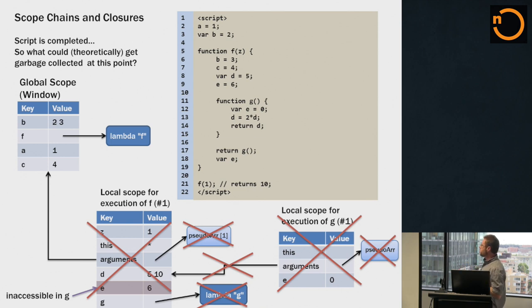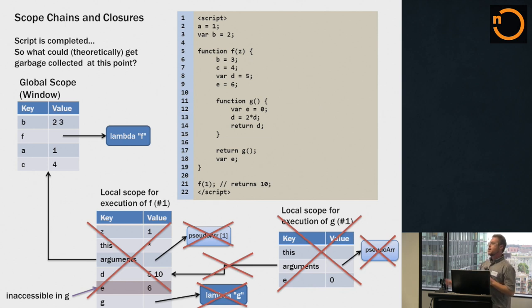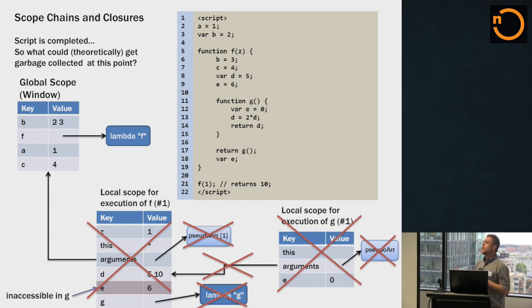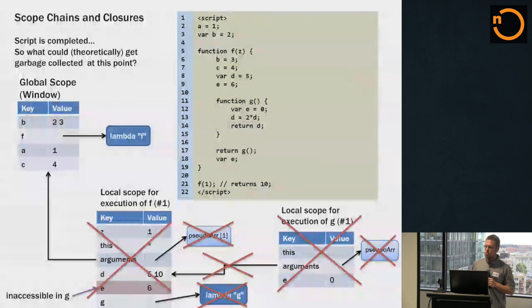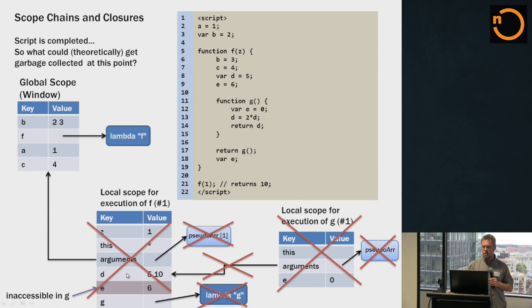What happens to all this stuff once we've finished line 21? What could get garbage collected? In JavaScript, garbage collection works by reachability — not via reference counting. If, starting at the global object, you can reach through a reference a particular object, you can't collect it. If you can't reach it, it can be collected. Everything without a pointer from the top scope can be collected — the F scope object, the G scope object, all the intermediate stuff has no handle from the global, so it can all go away.